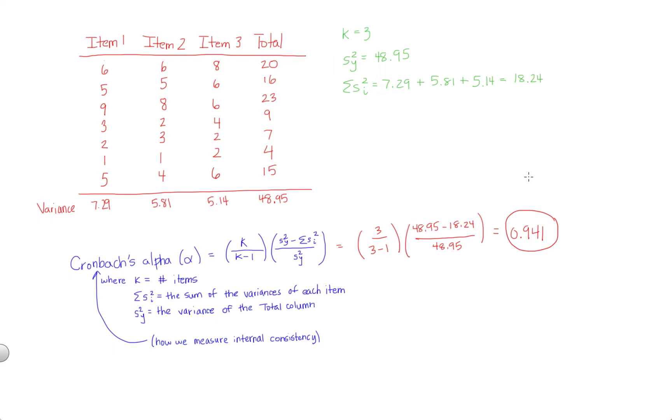This is a measure of internal consistency. And just as a rough interpretation, we want things positive. We want things as close to 1 as possible. So 0.94 is an excellent value of Cronbach's alpha.